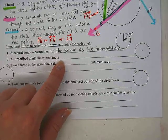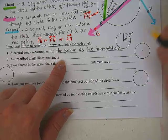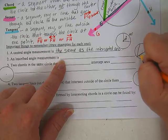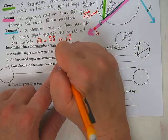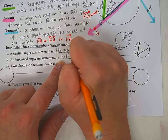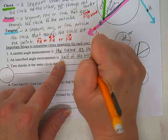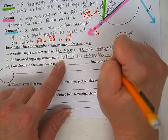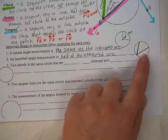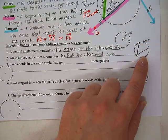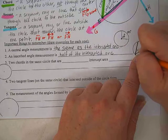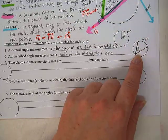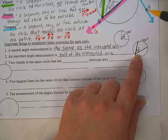Here's where we learn something new that you can't mix up with the last one. An inscribed angle measurement is half of the intercepted arc. So let's say that this arc is 100 degrees again — what's the angle in there going to be? The angle will only be 50 degrees because it's inscribed instead of central.